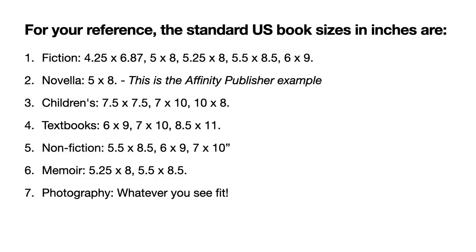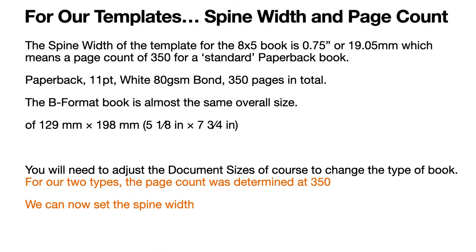The standard US book sizes in inches are shown on screen — you can pause and absorb that at your leisure. For our templates, spine width and page count: paperback, 11 point, white 80 gram bond, and 350 pages in total. The B format book is almost the same overall — it's 5 and 1/8 inch by 7 and 3/4 inch. So you can probably work on the same size, and the templates are set with a page count of 350.